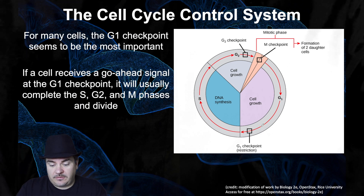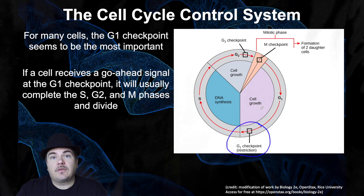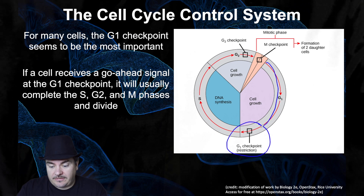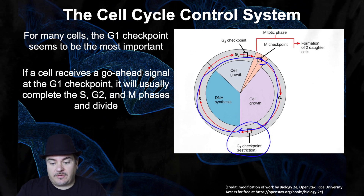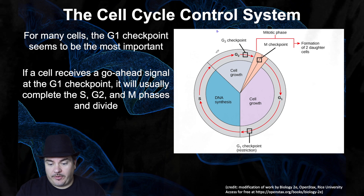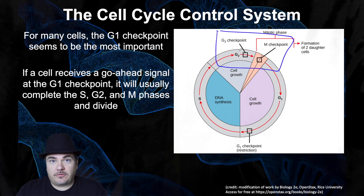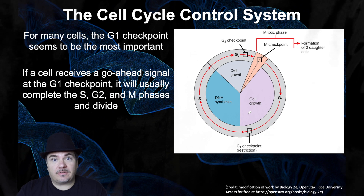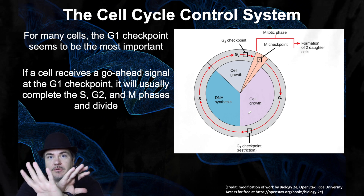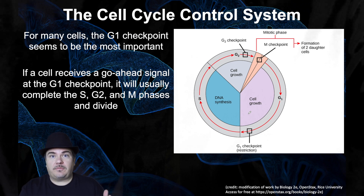The main checkpoint is the G1 checkpoint. Usually if a cell passes the G1 checkpoint, it will go through and finish the rest of the cell cycle, passing the other checkpoints as well. The purpose of the other two checkpoints is to make sure a mistake didn't happen — that there's not a problem. But each checkpoint says stop: do not proceed to the next part of the cell cycle.